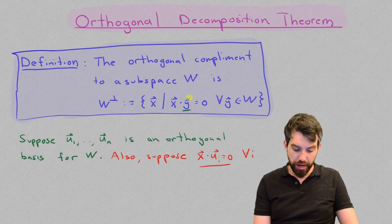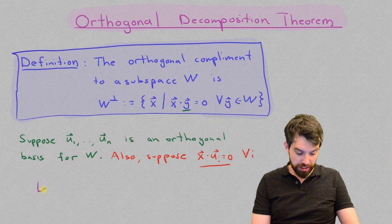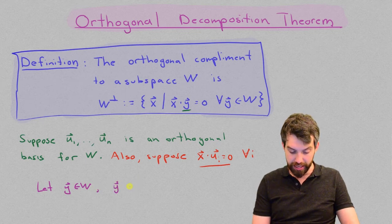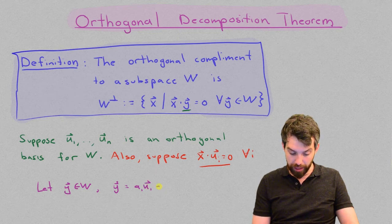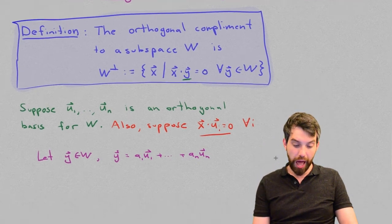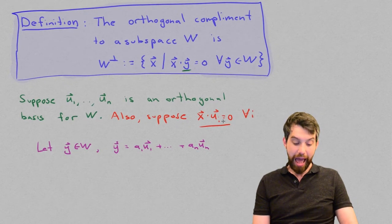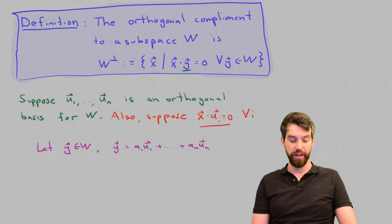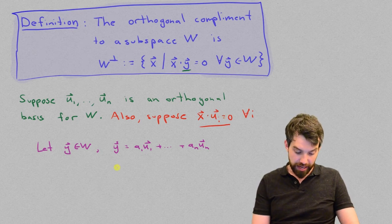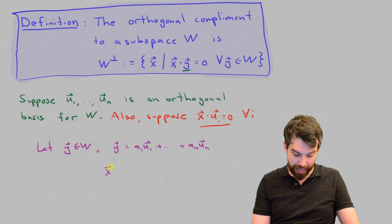And to do this, let's just choose a generic vector y. So, let's just take a vector y and I'm going to say that it's in w. But, because I have an orthogonal basis, what this means is that this vector y can be written as a1u1 plus all the way down to anun. And then, if I'm going to apply my property that x dotted with any of these particular vectors is going to be 0 where the vectors are on my orthogonal basis, what that's going to tell me is that if I compute this x dot y.